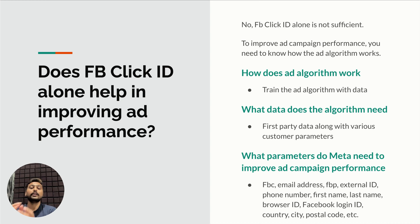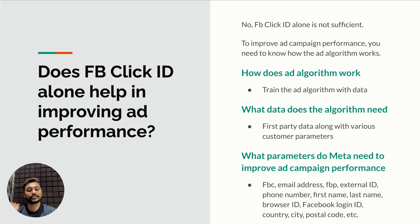What data does the algorithm need? It needs first-party data along with various customer parameters to help the algorithm learn better and optimize campaign performance. The parameters you need to send include: Facebook click ID (FBC), email address, FBP browser ID, external ID, phone number, first name, last name, Facebook login ID, country, city, postal code, and more. Out of all of these, the highest priority is given to FBC, FBP, and email address.